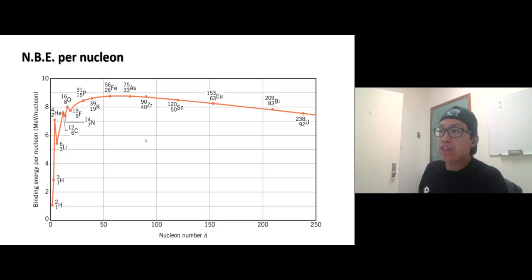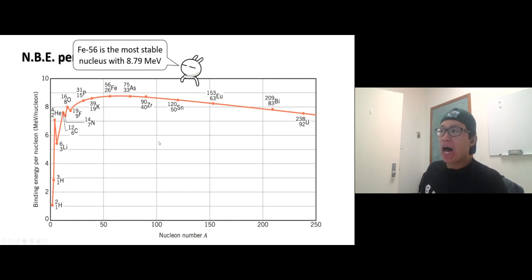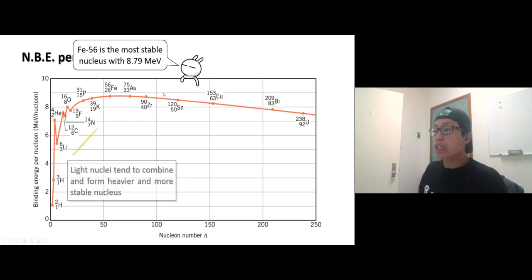We have seen a plot of the nuclear binding energy per nucleon and found that mid-weight nuclei are stable. The most stable are at iron-56 with 8.79 mega electron volts. Lighter nuclei can gain stability by combining to form heavier nuclei, and we call this process nuclear fusion.